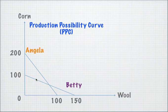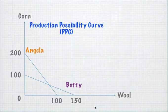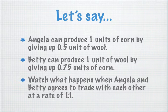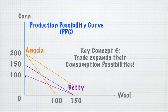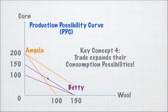Now, a slightly different diagram — Angela and Betty. Angela can produce 200 units of corn or 100 units of wool. Betty can produce 100 units of corn or 150 units of wool. The opportunity cost of Angela producing 1 unit of corn is 0.5 units of wool, and the opportunity cost of Betty producing 1 unit of wool is 0.75 units of corn. Watch what happens when Angela and Betty agree to trade with one another at a rate of 1 to 1. You can see that Betty's production possibility curve and her consumption possibility curve are different — normally the two are the same, but when trade is possible, the consumption possibility is expanded.